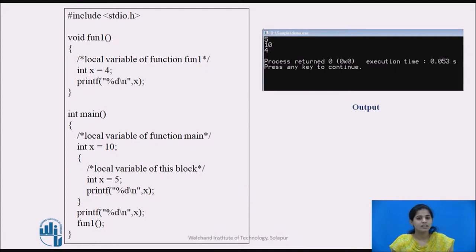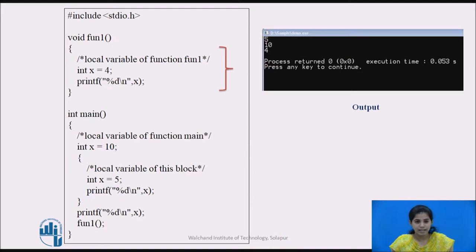So here it displays the values 10 and 4. Whatever variable is declared in fun1, its scope is only within that block. We cannot access that variable outside fun1.